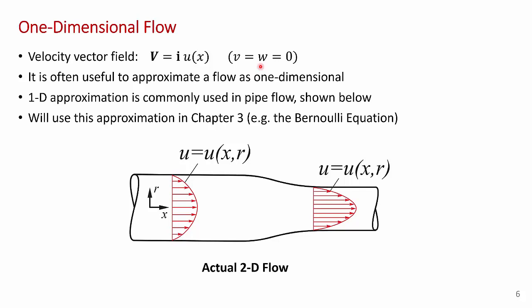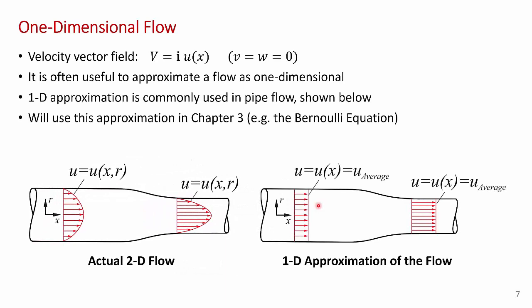The 1D approximation is commonly used in pipe flow, as I've shown below. Now, in a typical pipe flow, where the flow is in the x direction, the u component of velocity in general would be a function of the distance down the pipe x, as well as r, the radius of the pipe. But in some cases, it's useful to neglect the variation in the r direction and to approximate that flow as just being a function of x. And so this figure here shows the one-dimensional approximation, where we represent the flow as just u of x, where we use the average velocity to characterize the flow. And that average velocity changes with x. We will be using this approximation later in this chapter when we study things like Bernoulli's equation.